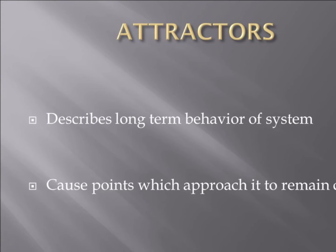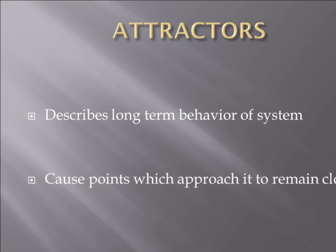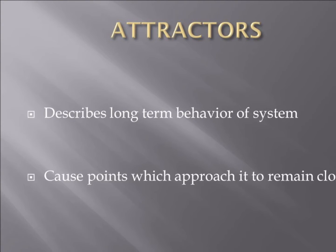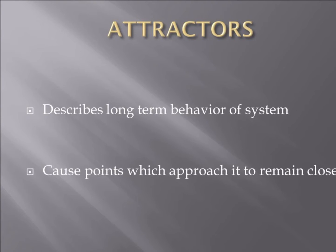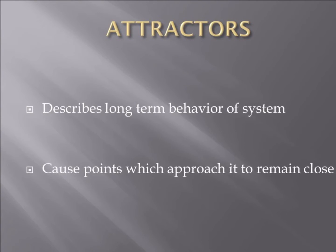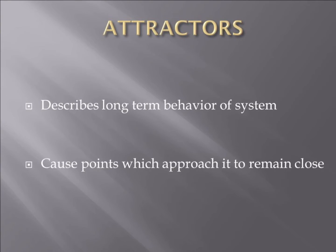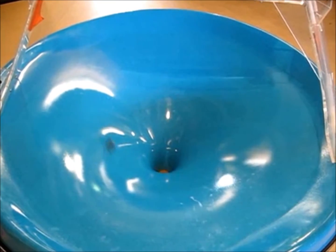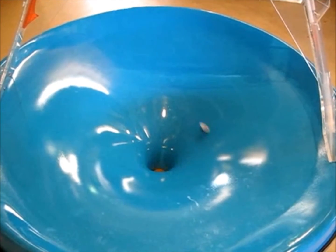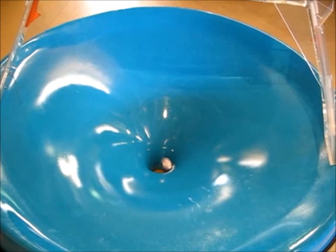As mentioned before, dynamical systems change over time. To describe the long-term tendencies of dynamical systems, we use a set known as an attractor. An attractor causes points which approach it to remain close as time elapses unless affected by some external force. It is logical that over time, systems tend to settle in a particular state as most systems in nature seek equilibrium. Consider a ball coming to rest at the bottom of a bowl or chemical elements forming ionic bonds to fill valence shells. See this penny in the basin. As soon as the penny is released, we know it will be drawn toward the hole in the center, excluding any external forces. This is, in essence, what an attractor is. All objects which enter the system will tend to this point as time elapses.